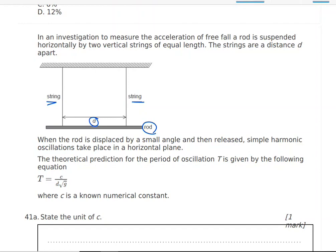Now, the rod will start to oscillate back and forth. If it's displaced by a small angle and then released, simple harmonic motion take place in a horizontal plane. So simple harmonic motion, it means it's got to oscillate back and forth, keep oscillating back and forth.